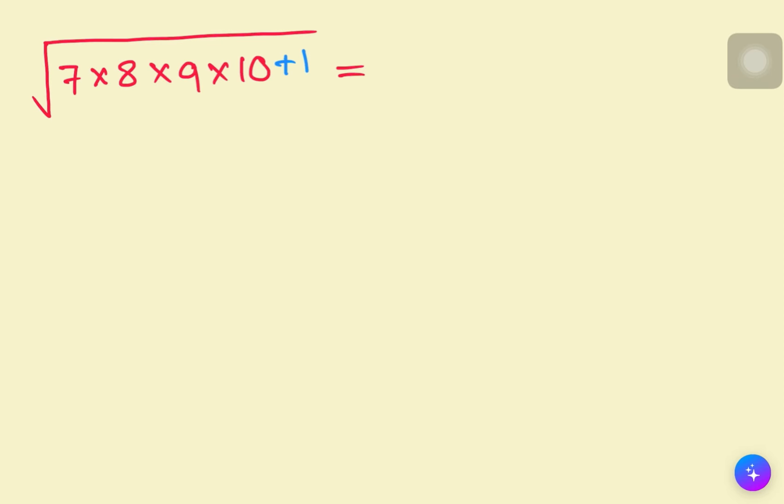We can rearrange this expression by regrouping the terms. Let's multiply 8 and 9 together, and multiply 7 and 10 together. So we have 7 multiply 10, then 8 multiply 9, plus 1.